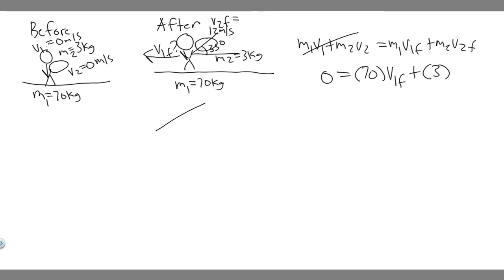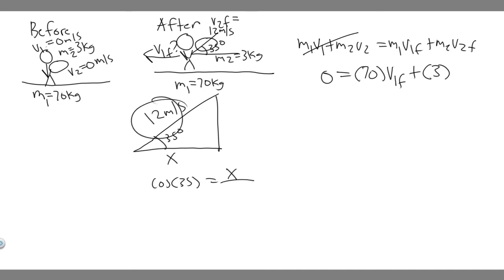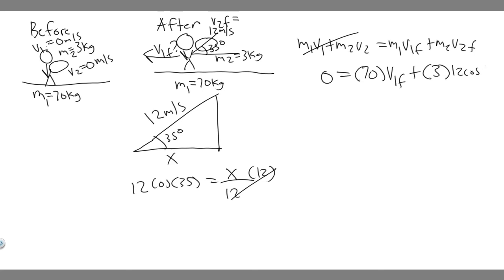To find the horizontal component: we have 35 degrees and a speed of 12 meters per second. We want the X component. The cosine of 35 degrees equals adjacent over hypotenuse, so X over 12. Therefore X equals 12 times cosine of 35 degrees. That's the horizontal component, so V2 final equals 12 times cosine of 35.